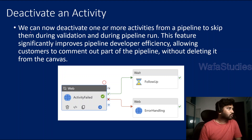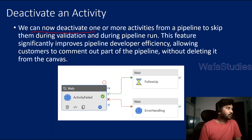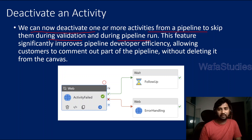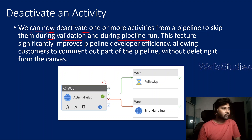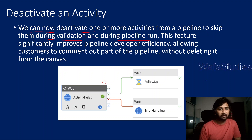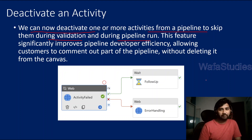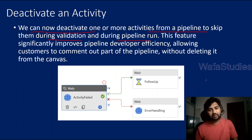When you deactivate any activity from a pipeline, you are telling the runtime: don't validate that activity and don't run it during any pipeline execution — whether it's a debug execution or a pipeline run. Consider it like a commented line. If you are from a developer background, when you don't want some portion of code to run, you comment it out. Same thing here — when you deactivate an activity, it's like commenting it out and telling Data Factory not to execute it.